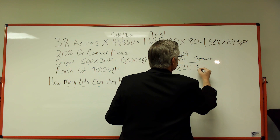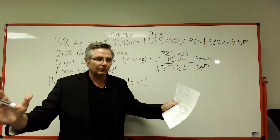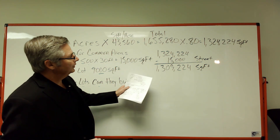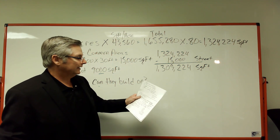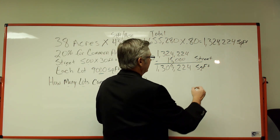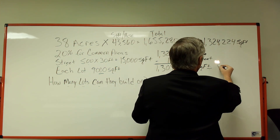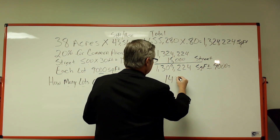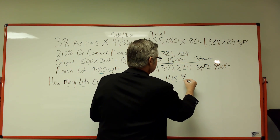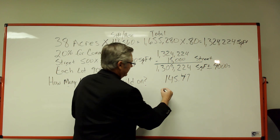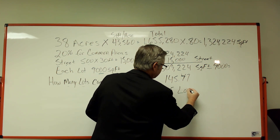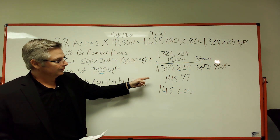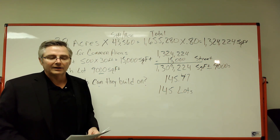That comes out to 1,309,224 — so that's my usable square feet. I've taken that big piece of land and turned it into smaller pieces. Now it tells me that each lot will be 9,000 square feet. So I've got 1,309,224 square feet to work with, divided by 9,000. If you put that in your calculator, that comes out to 145 — so you can round that to 145 buildable lots. We take that big piece of land, turn it into smaller pieces, and build 145 lots on that property.